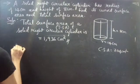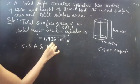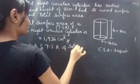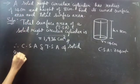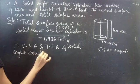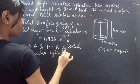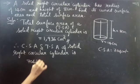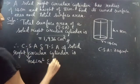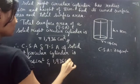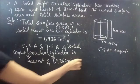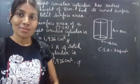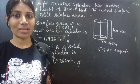Therefore, the CSA and TSA of the solid right circular cylinder are 704 centimeter square and 1936 centimeter square respectively. So we have seen a problem in this video. Hope you understand. We will see you in the next video — until then, bye bye!